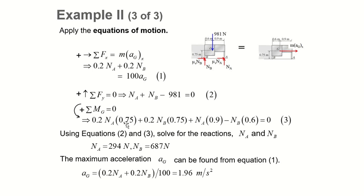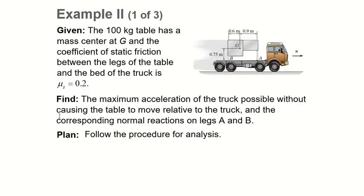The moment equation is zero because we don't want the table to slide. We use equations 2 and 3 to get N_A and N_B — write N_A in terms of N_B, substitute, and solve. The maximum acceleration a_G can be found from equation 1 by plugging in N_A and N_B, giving a = 1.96 m/s². That's the acceleration the truck can reach without the table sliding.